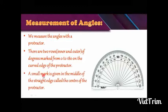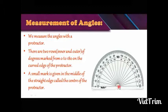A small mark is given in the middle of the straight edge, called the center of the protractor. You can see the straight edge here, and this small point is the center of the protractor.